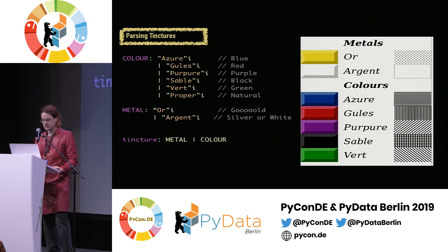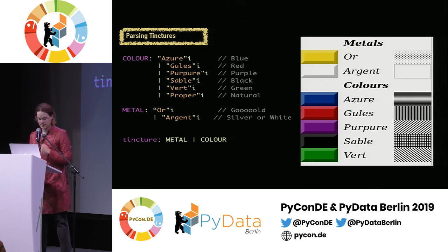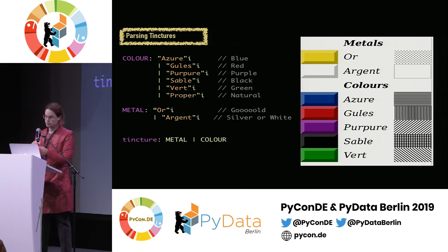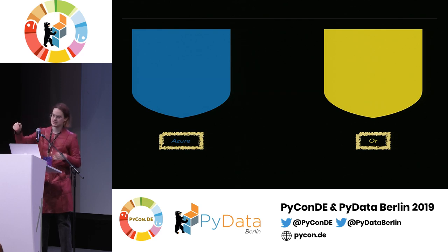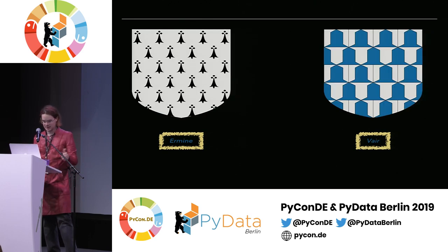For the simple ones, let's just talk about the tinctures, which are their word for colors. They separate them into metals and colors, which will come up later, and they have all these strange words for them. Those are all just going to be keywords, and then a tincture will be either a metal or a color. These are important because there's a lot of rules about what colors can go with what colors. Some people managed to register blue as their coat of arms and no one else could have blue. So we can parse these immediately — it starts being useful.